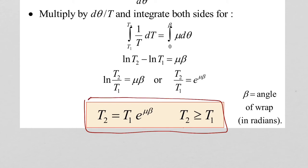And this equation tells us that T2, which is our high side, high tension side, is equal to T1e to the mu beta. And beta is this wrap angle in radians.